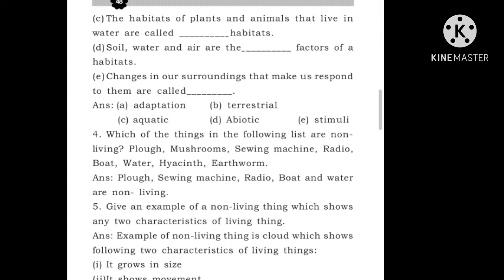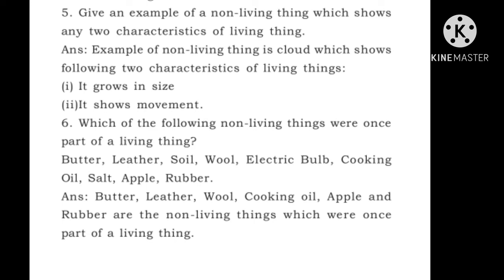Question 4: Which of the following are non-living? From the list of fluff, mushrooms, chewing machine, radio, boat, water, hyacinth and earthworm — the non-living ones are fluff, chewing machine, radio, boat and water. Question 5: Give an example of a non-living thing which shows any two characteristics of a living thing. A cloud, which is non-living, shows two characteristics: it increases in size and it shows movement. Question 6: Which of the following non-living things were once part of a living thing? From butter, leather, soil, wool, electric bulb, cooking oil, salt, apple, rubber — the answer is butter, leather, wool, cooking oil, apple and rubber were once part of a living thing.